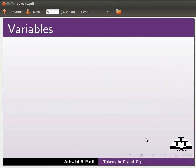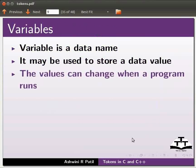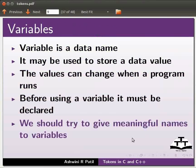Now we will move on to variables. Variable is a data name. It may be used to store a data value. The values can change when a program runs. Before using a variable, it must be declared.